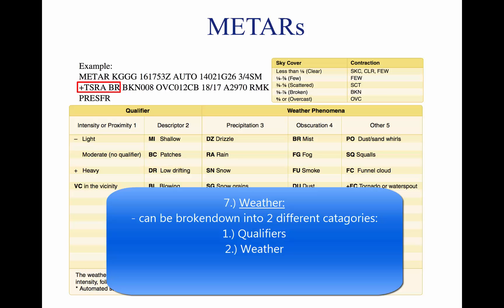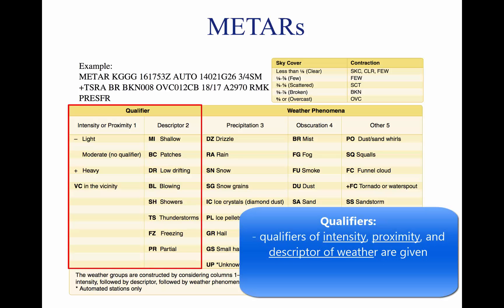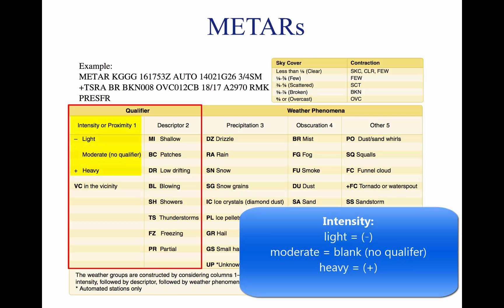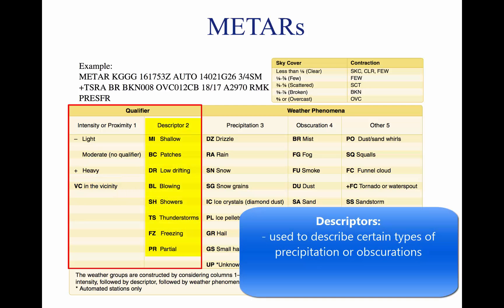Seven, weather — plus TSRA, BR, can be broken down into two different categories: qualifiers and weather phenomenon. The qualifiers of intensity, proximity, and the descriptor of the weather will be given. Intensity may be light (minus), moderate (blank), or heavy (plus). Proximity only depicts weather phenomena in the airport vicinity; the notation VC indicates a specific weather phenomenon is in the vicinity of 5 to 10 miles from the airport. Descriptors are used to describe certain types of precipitation and obscurations. Weather phenomena may be reported as precipitation, obscurations, and other phenomena such as squalls or funnel clouds. Descriptions of weather phenomena as they begin or end and hailstone size are also listed in the remarks section.